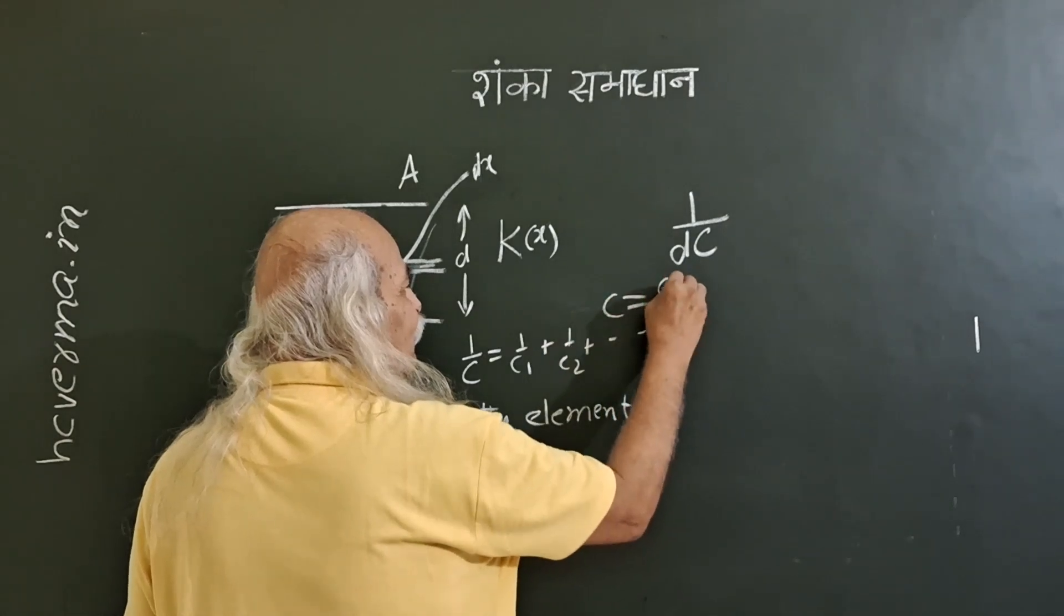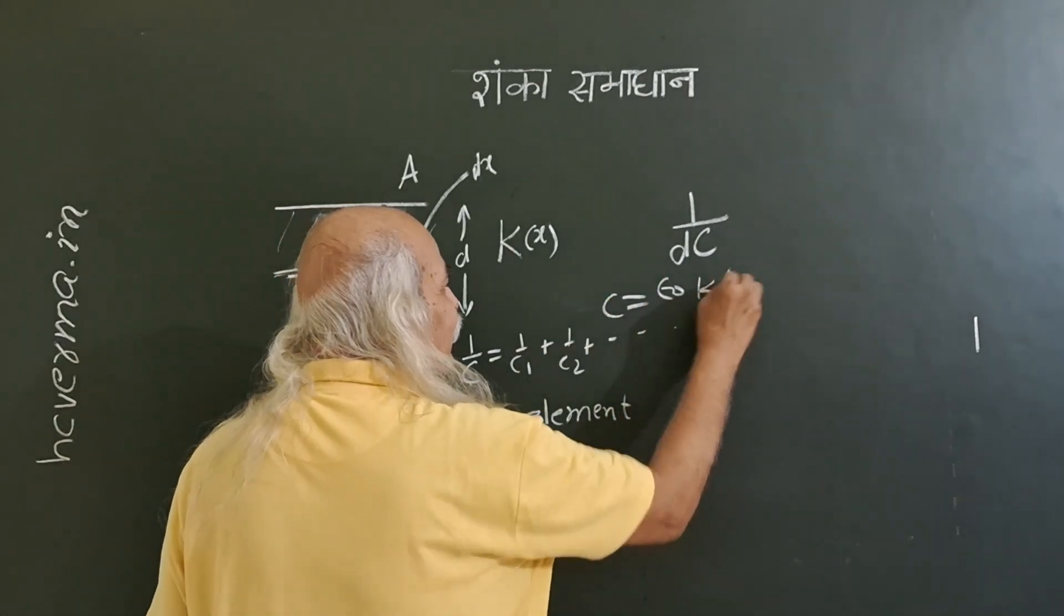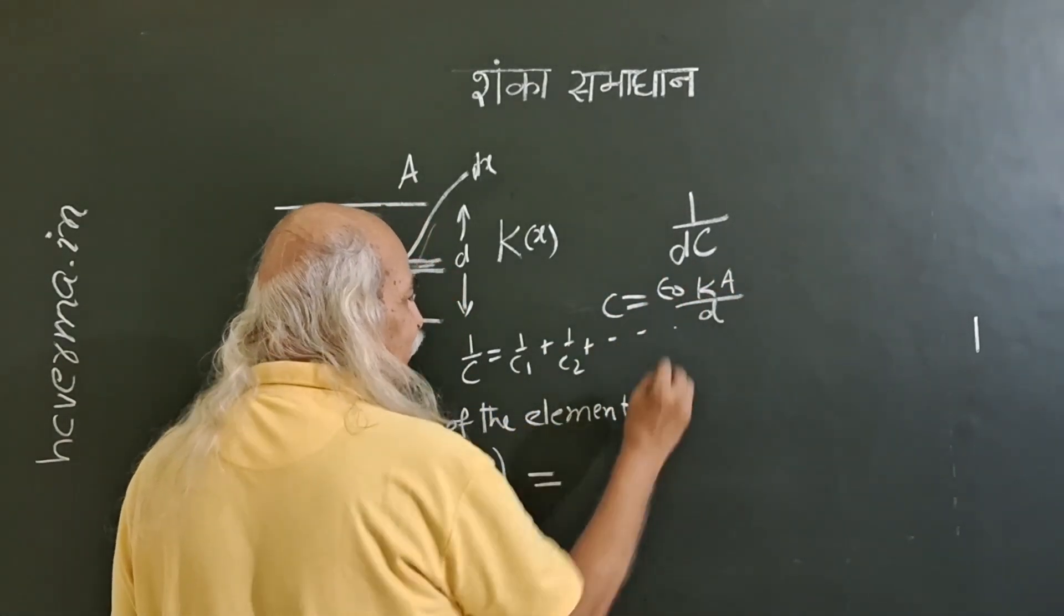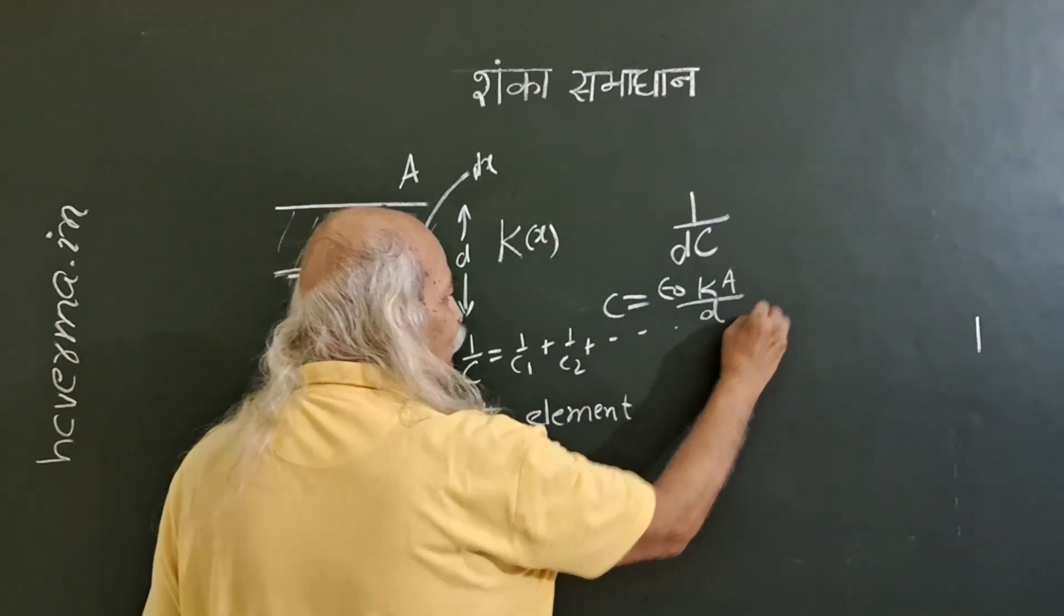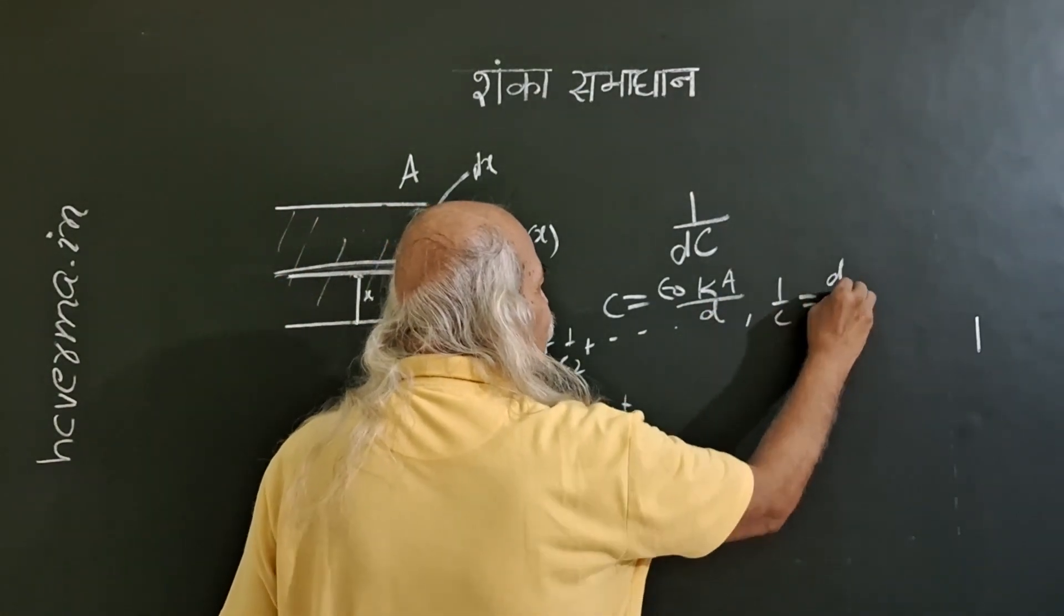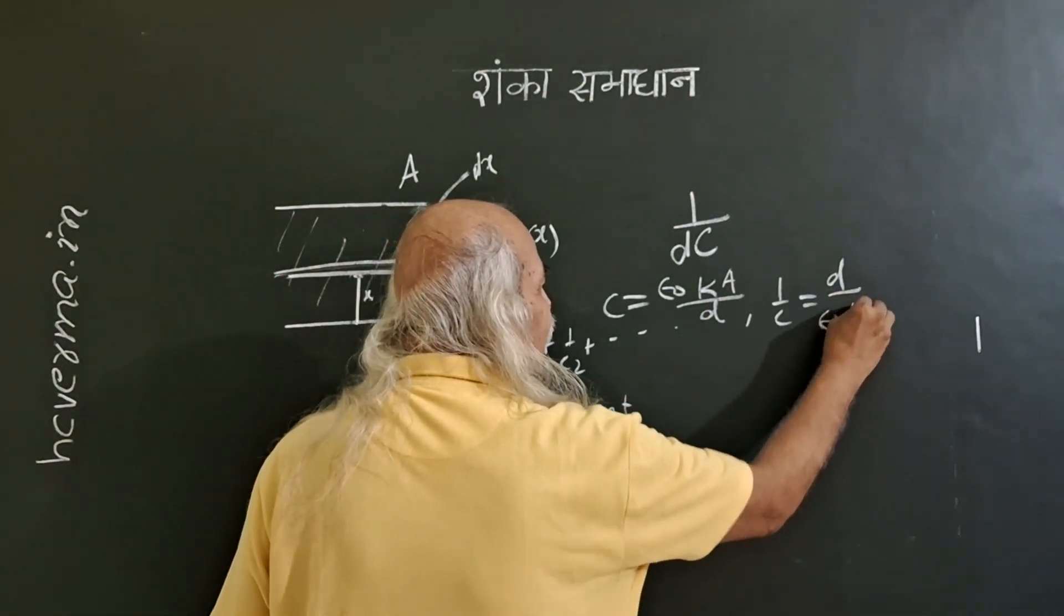So c is epsilon naught k A by d here, and therefore 1 by c will be d by epsilon naught k A.